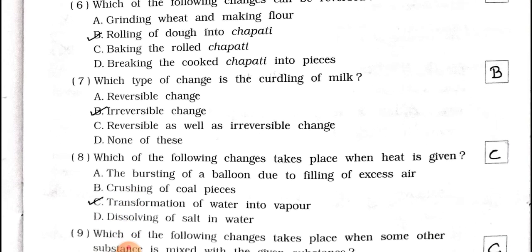Number 7. Which type of change is the curdling of milk? A reversible change, B irreversible change, C reversible as well as irreversible change, D none of these. Answer is option B, irreversible change.